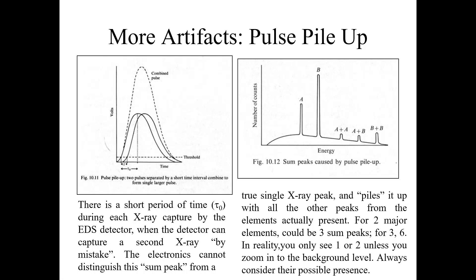There is a more significant artifact: pulse pile-up. There is a short period of dead time noted during each X-ray captured by the EDS detector, when the detector can capture a second X-ray by mistake. The electronics cannot distinguish this sum peak from the true signal X-ray peak, and it files up with all other peaks from elements actually present. For two major elements there could be sum peaks, but in reality you only see one or two unless you zoom to the background level. Always consider their possible presence.